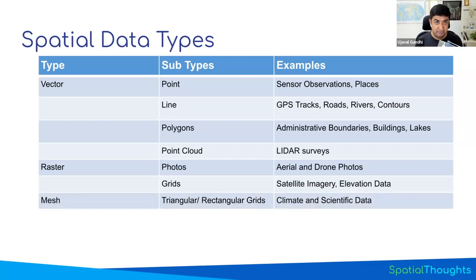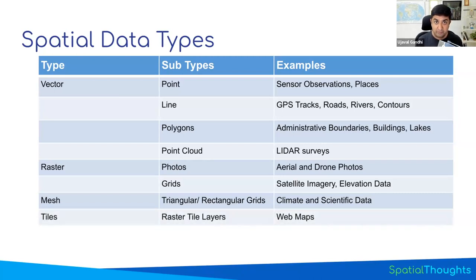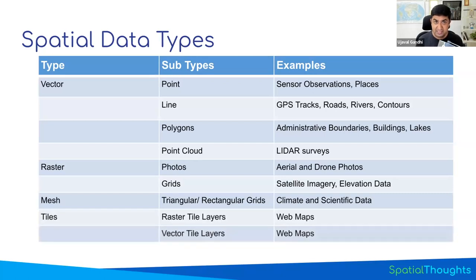Another type of dataset is called mesh data. These are time series data at different continuous locations. Typically, a lot of weather and atmospheric data is represented using meshes. Historically, people used raster data to manage that, but a more modern approach uses the mesh data type. Lastly, we have tiles. These are typically used in web services — if you want to share or publish geospatial data, you chop your data into smaller tiles and each tile is fetched by the server depending on the user's request. Both raster tile layers and vector tile layers work similarly to raster and vector datasets but are created and shared in tile format.